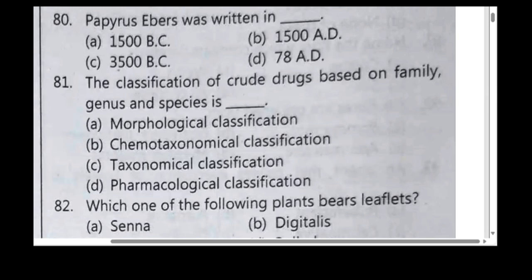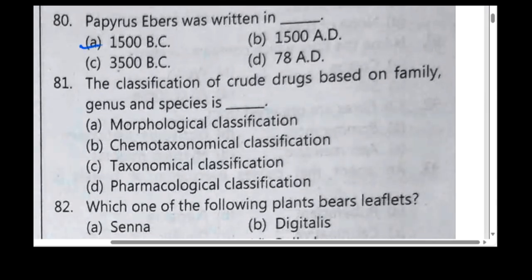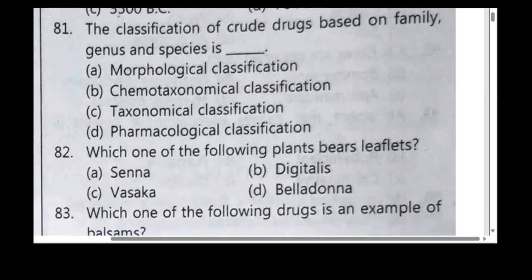Papyrus Abbas was written in option A, 1500 BC. The classification of crude drugs based on family, genus and species is called taxonomical classification.